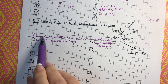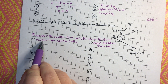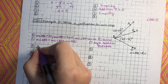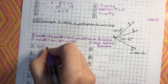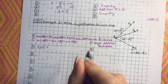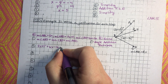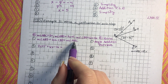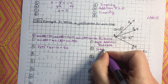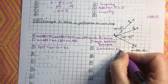From here, we substitute all the information into our equation. The measure of angle ABD is 3x plus 5, so we substitute that in; plus the measure of angle CBD, which is 6x minus 16; and the measure of angle ABC equals 8x. That is the substitution property of equality.